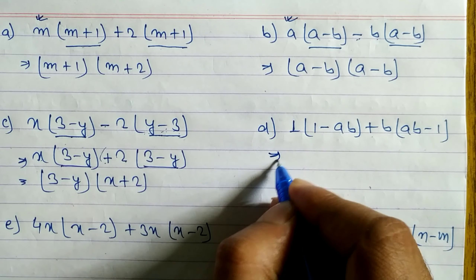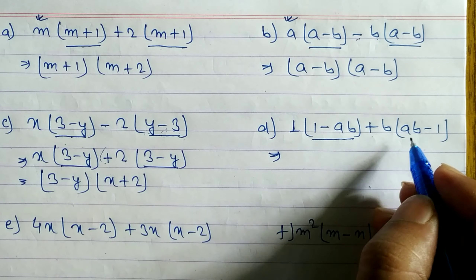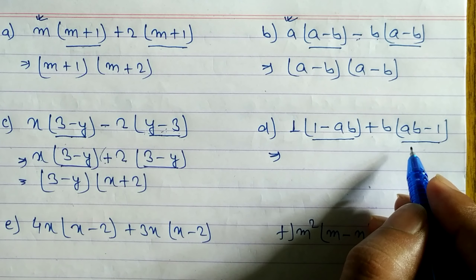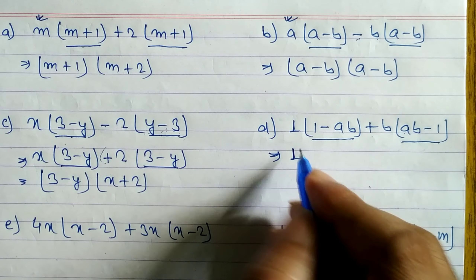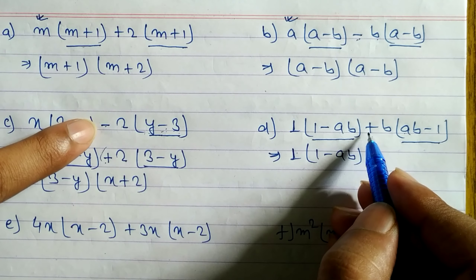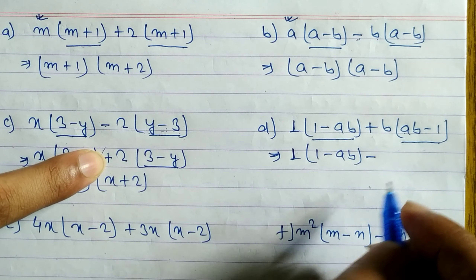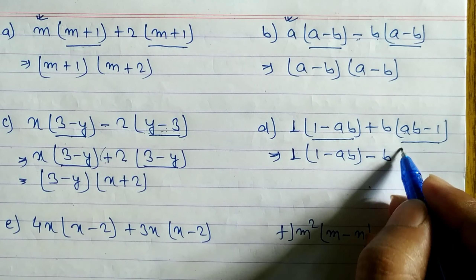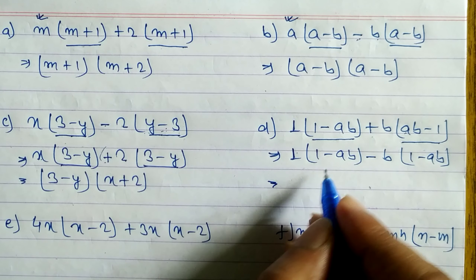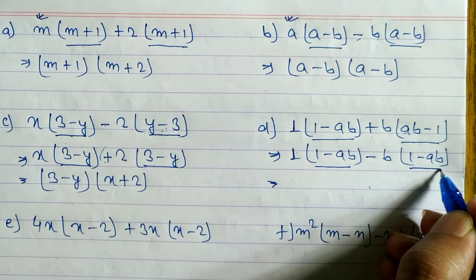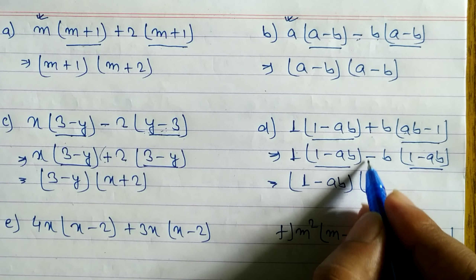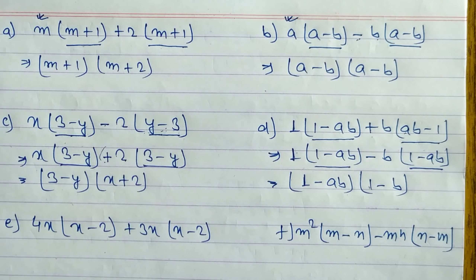Now look at question d. Here it is 1 minus ab, but here is ab minus 1 — these two are not the same, but we have to make them same. So we interchange: write 1 minus ab, and change the sign — if minus, write plus; if plus, write minus. We interchange the two places to get 1 minus ab, because we are taking minus common from here. Now here is 1 minus ab and here also 1 minus ab, so we can take 1 minus ab as common. Remaining here is 1, and here is minus b, so minus b.